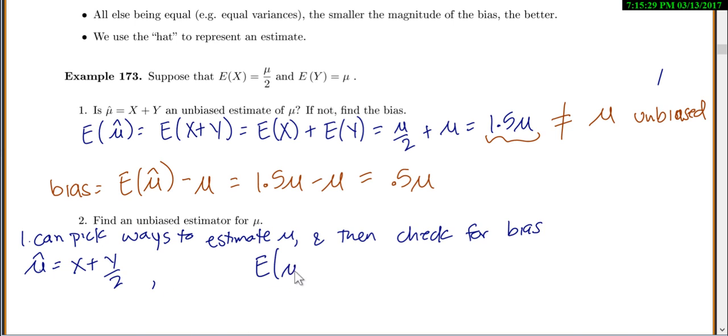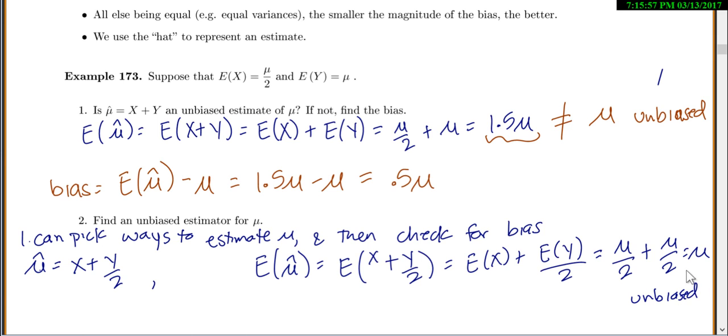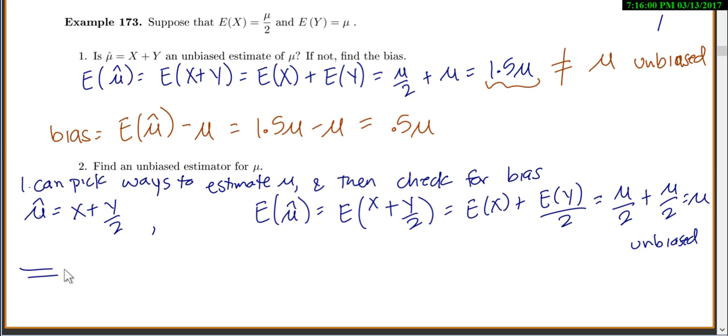Then the expected value of that would be the expected value of X plus Y over 2. And so that would be the expected value of X plus the expected value of Y over 2, using our expected value rules. So the expected value of X is mu over 2, the expected value of Y is mu, but we divide it by 2 and we get mu. So that is unbiased.